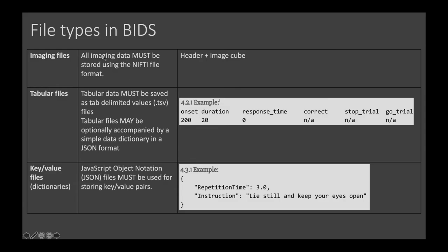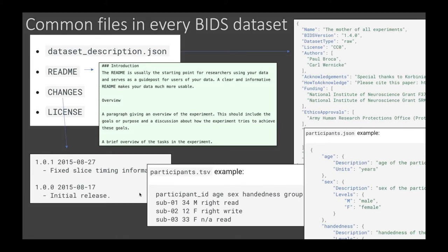The idea is to have a reduced set of file types. Imaging files must be stored in NIfTI format — a header with metadata plus the raw image cube. We have tabular data for two-dimensionally structured data, and key-value files, dictionaries, and metadata files. The idea was initially to keep to a low number of files, but things got out of hand and many new file types were added.